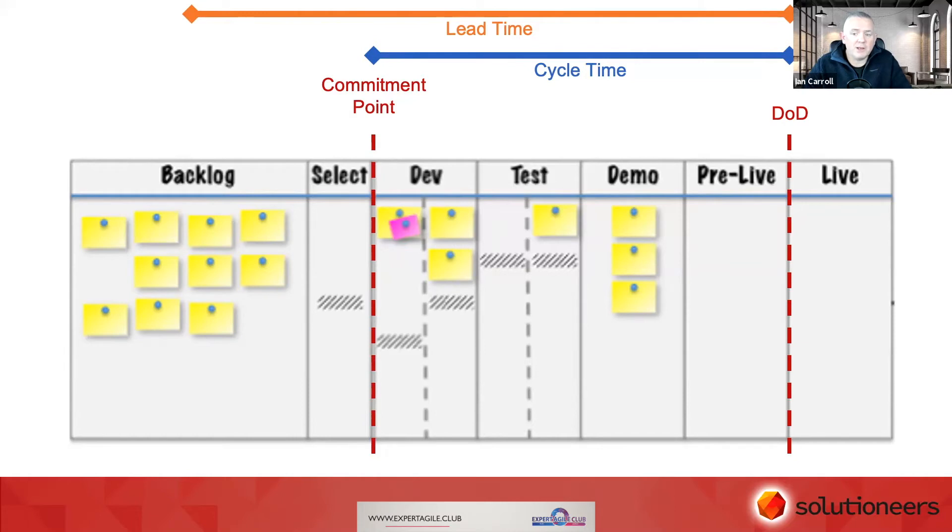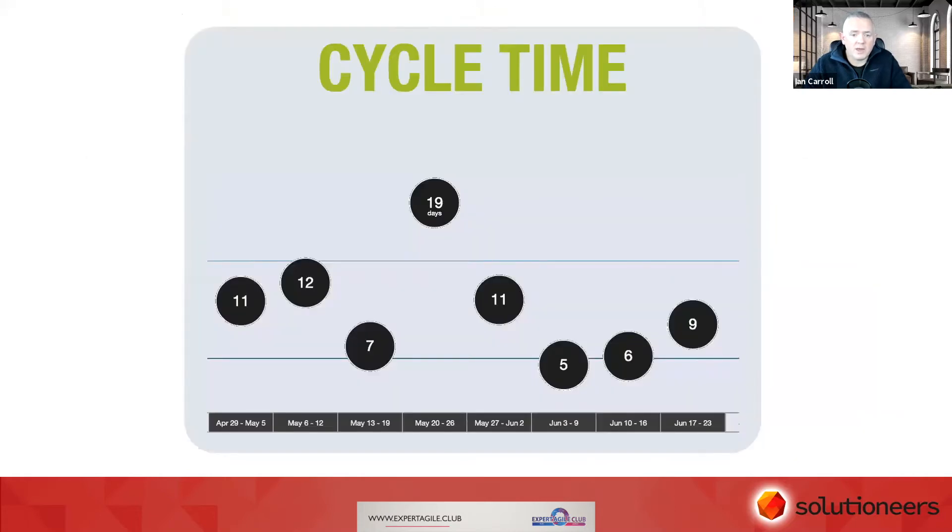The reason cycle time is really important is that when we get into charting and visualizing our cycle time, we can see here on this chart, essentially this item here took 11 days to get across the board, this item took 12 days, this item took 7 days. And actually, this is real data from a team.